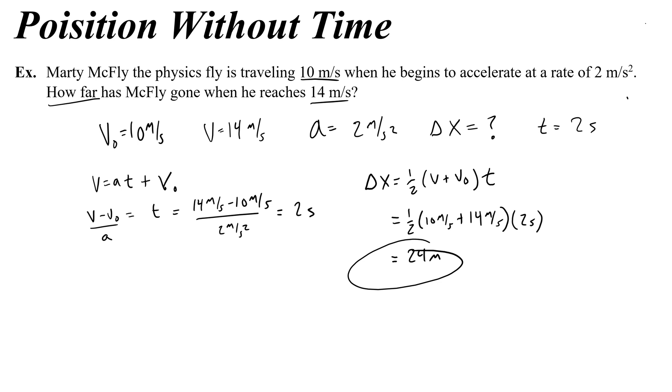There's actually a way we can create an equation that follows this same process, so we don't have to do this every time we want to find position without time. I call it the 'ain't got no time' equation — you use it when you don't have time, both literally and metaphorically.